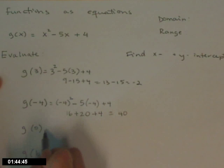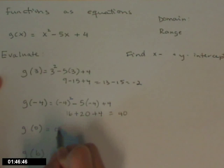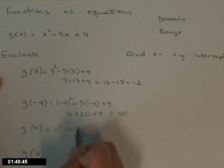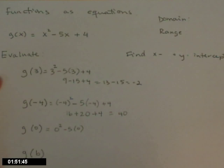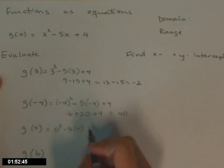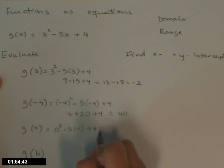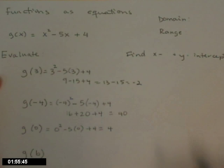g of 0 — these are nice. All of those terms that have x's in them get replaced with 0, so those terms go away. So that answer is just 4.